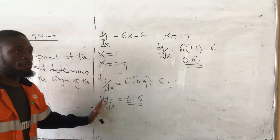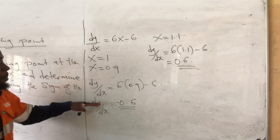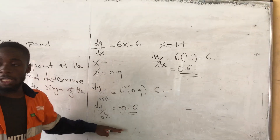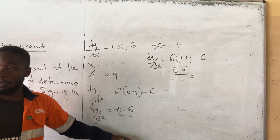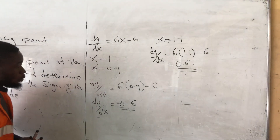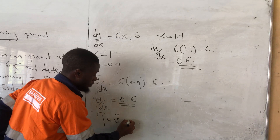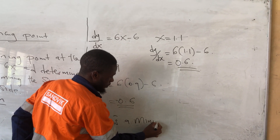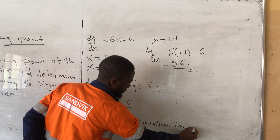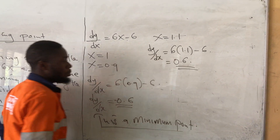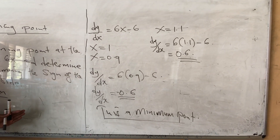We are moving from a negative value to a positive value, meaning this is a minimum point. When you move from negative to positive gradient, this is the minimum point. So this is the minimum point because we are moving from negative to the positive value.